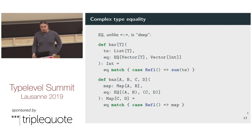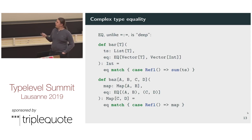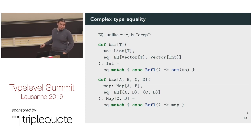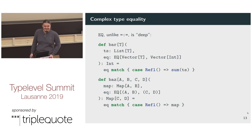EQ also makes type equality go deep. If we have evidence of equality between Vec of T and Vec of Int, that means T must equal Int, so we can convert a List of T to a List of Int. And if we have evidence of equality between A and B, and C and D, then A must equal C and B must equal D — so we can convert a Map of A and B to a Map of C and D. This did not work at all with Scala 2.